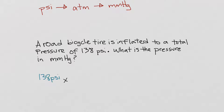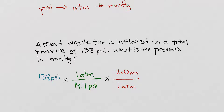So, let's get back to here. We started off at 138 psi. We need to go to atmospheres now. One atmosphere is 14.7 psi. Next, one atmosphere is 760 millimeters mercury. You can see the pathway of how I get to millimeters mercury — psi and psi cancel, atmospheres cancel, and now I'm left with millimeters mercury.